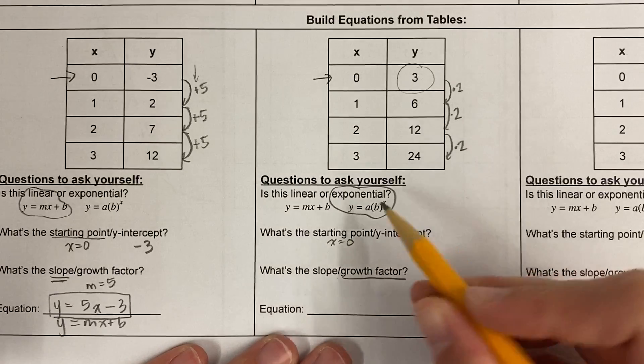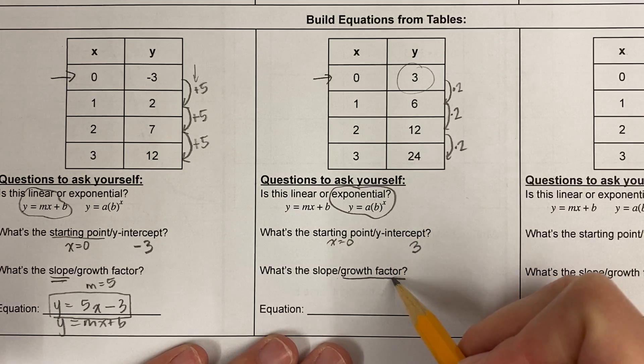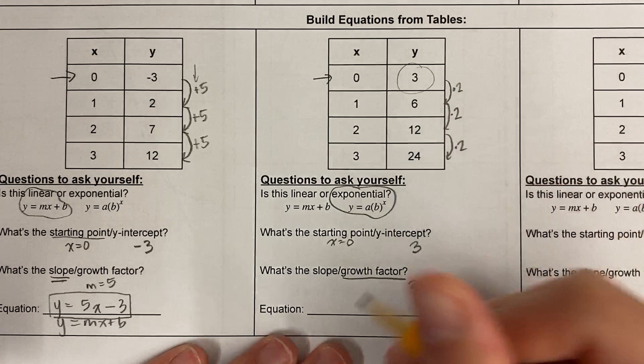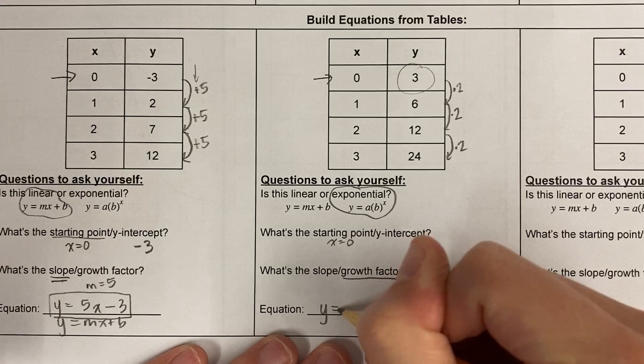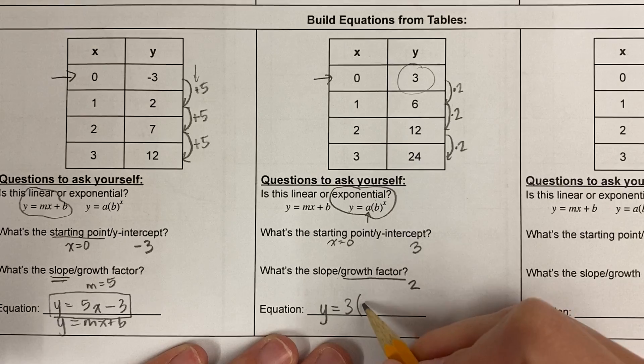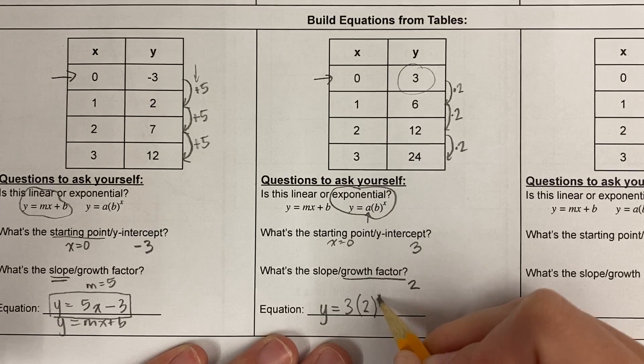What's the growth factor? Because with exponential, I use what's called a growth factor. How much is it growing by each time? It's growing by 2. So my equation looks like this: y equals starting point times the growth factor to the power of x.